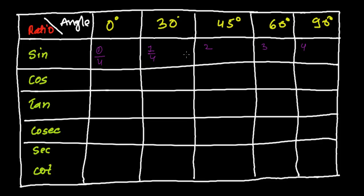Divide everything by 4. The next step is to take the square root of everything — square root of each value.